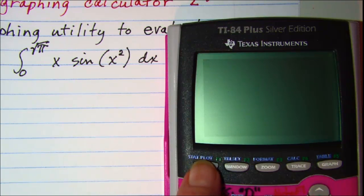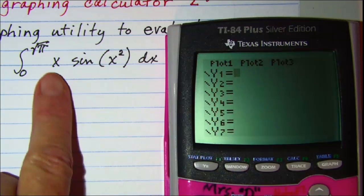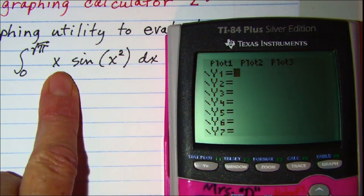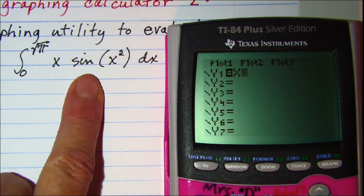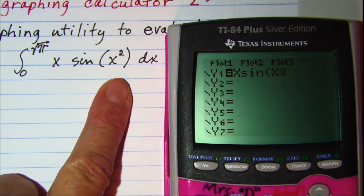Our first thing we need to do is enter our function into the y equals screen. So we have x times the sine of x squared.